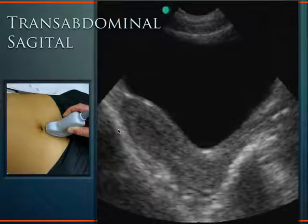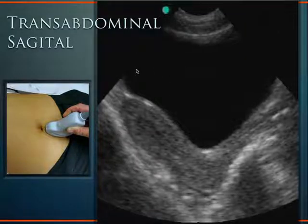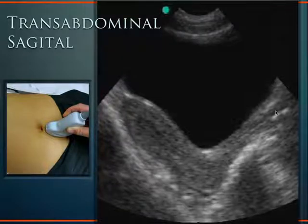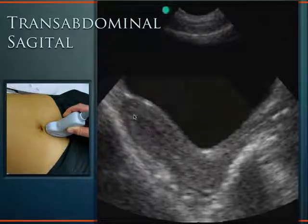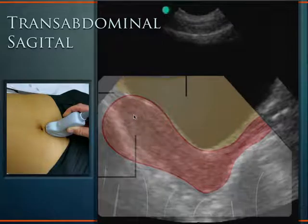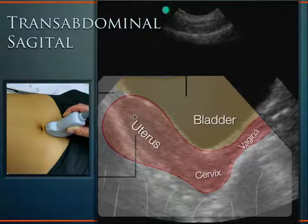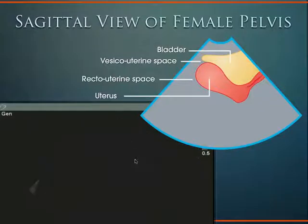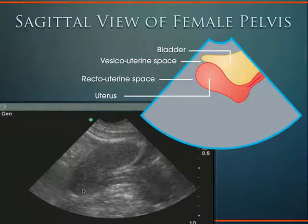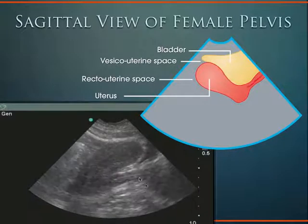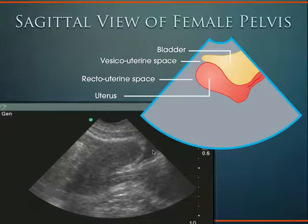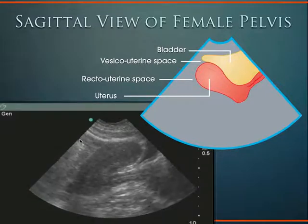In the transabdominal sagittal approach with indicator towards the patient's head, the bladder appears triangular. You can see the uterus, the cervix, and the vaginal stripe terminating at the cervix, with the anteverted uterus coming up. When the bladder is empty, the uterus is nearly 180 degrees on itself onto the vaginal stripe. As the bladder fills, it pushes the fundus of the uterus posteriorly.